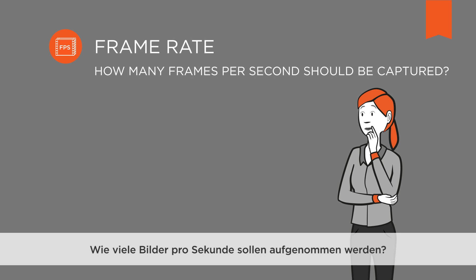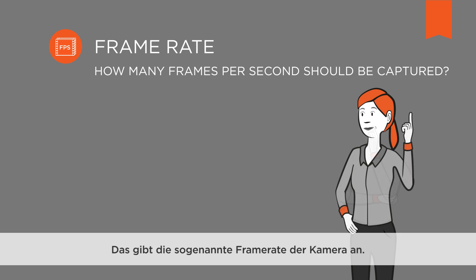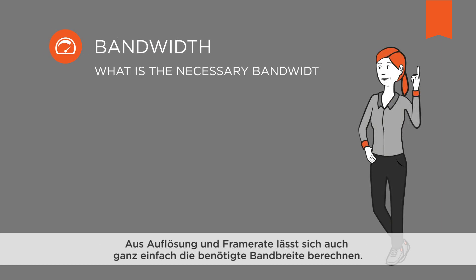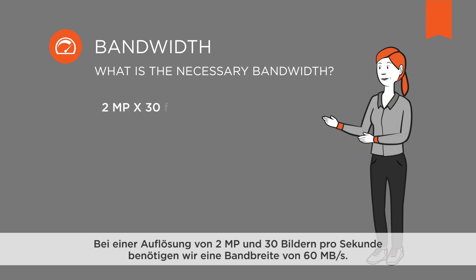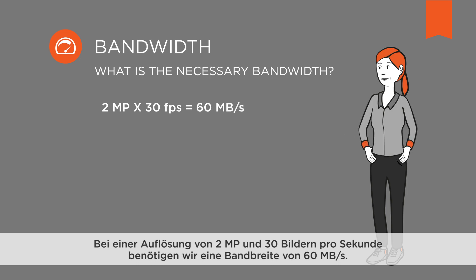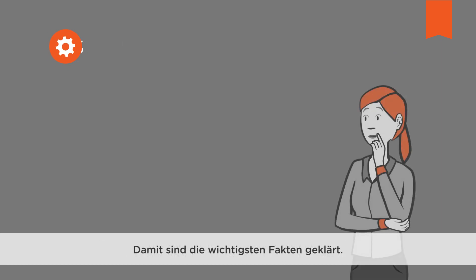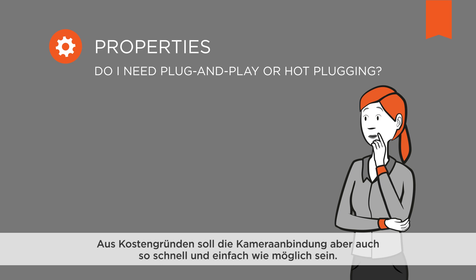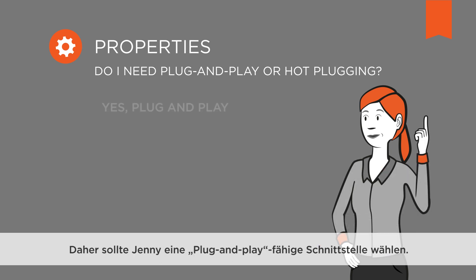How many frames per second should be captured? This is known as the camera's frame rate. 30 frames per second are more than enough in this scenario. The resolution and frame rate are simply multiplied to calculate the necessary bandwidth. At a resolution of 2 megapixels and 30 frames per second, we need a bandwidth of 60 megabytes per second. For cost reasons, the camera connection should be as quick and simple as possible, which directs Jenny towards a plug-and-play ready interface.